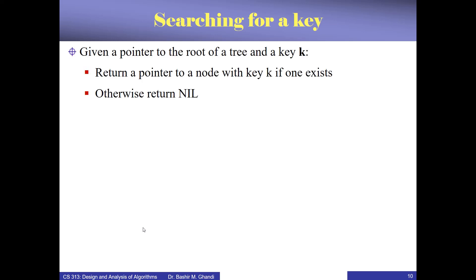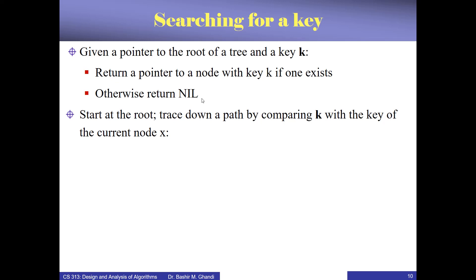Now let's look at the search operations, starting with the main search algorithm. Given a key k, we want to return a pointer to the node containing k if it exists, otherwise return nil. We start from the root and keep comparing our target against the key in the current node, deciding whether to go left or right, until we either find the target or reach an empty node.